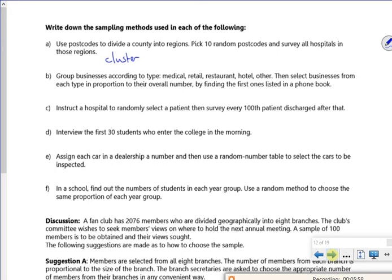Then group businesses according to type, medical, retail, restaurant, hotel, and select businesses from each type in proportion to their overall number. So we're going to go with quota. There's an argument there that it's stratified when you're just choosing one bit of it. So you're just choosing your business.